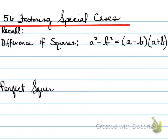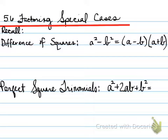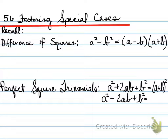The other special case we looked at was a perfect square trinomial. A perfect square trinomial looked like a squared plus 2ab plus b squared, and the question originally looked like (a plus b) all squared. Or if you had a squared minus 2ab plus b squared, that looked like (a minus b) all squared. A binomial squared will always result in a special unique trinomial — not a binomial, but a trinomial.